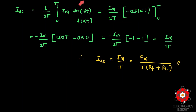After integrating Im·sin(ωt) with respect to ωt over the interval 0 to π, we get −cos(ωt) evaluated from 0 to π. Substituting the values for cos(π) and cos(0), and knowing that Im = Em / (RF + RL), the DC average current is IDC = Em / [π·(RF + RL)], which simplifies to IDC = Im / π.